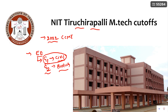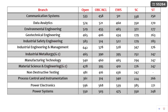Now let us enter into the cutoffs. Here you can see the branch-wise and category-wise cutoffs for each and every branch. The first branch is Communication Systems, which is a famous branch in ECE. The cutoffs are: Open 533, OBC Non-Creamy Layer 450, EWS 511, SC 338, ST 250. Next, Data Analytics cutoff is 574 for Open category.